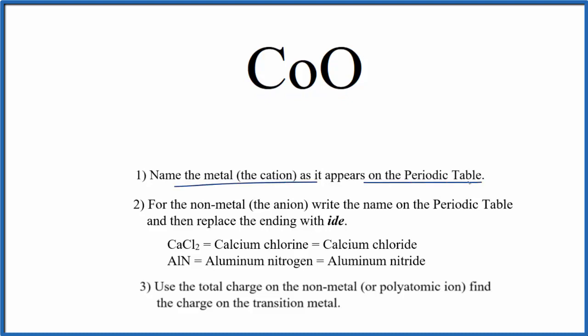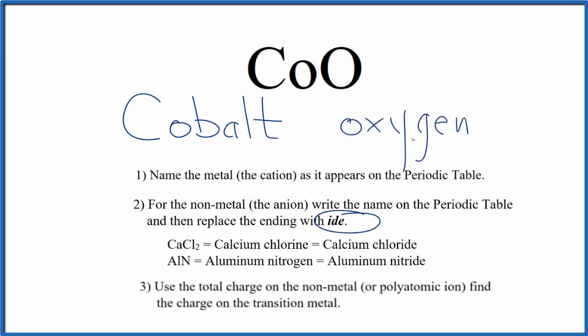First we write the name for the metal as it appears on the periodic table - Co, that's cobalt. Next we're going to write the name for the non-metal as it appears on the periodic table - O, that's oxygen. And then we cross the ending out and replace it with ide.